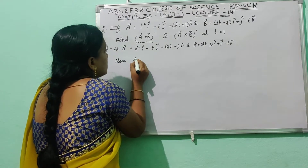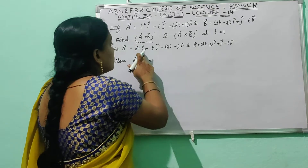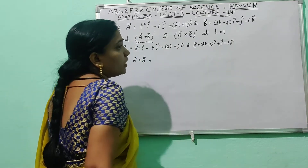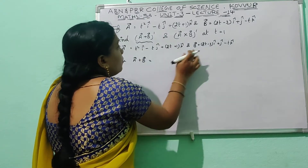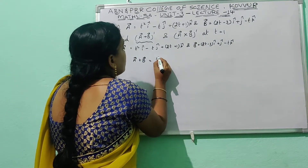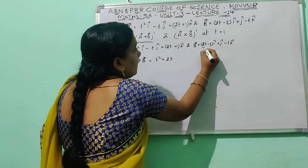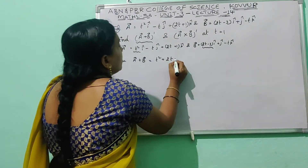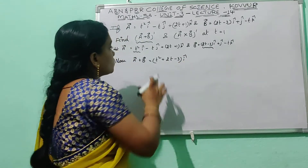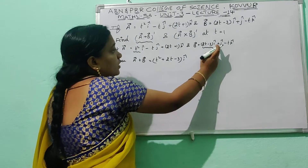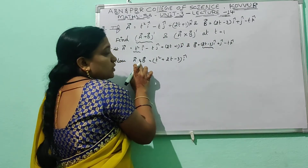For ā + b̄, we take the common components: î, ĵ, k̂. The coefficient of î from ā is t², and the coefficient of î from b̄ is (2t−3). Adding these two terms gives (t² + 2t − 3) î.